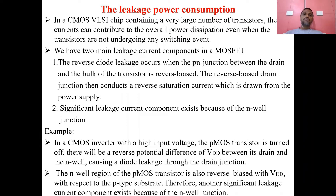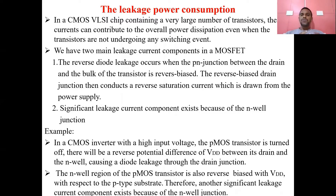There are two main leakage current components in a MOS transistor. First, reverse diode leakage occurs when a PN junction between the drain and bulk of the transistor is reverse biased. In an N-MOS transistor, we have a P-type substrate with N-type source and N-type drain. Between the P substrate and the N-type material, junctions form; whenever they are in reverse bias, a reverse saturation current flows — that is the leakage current.